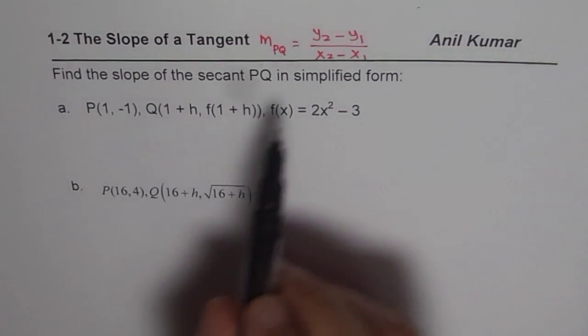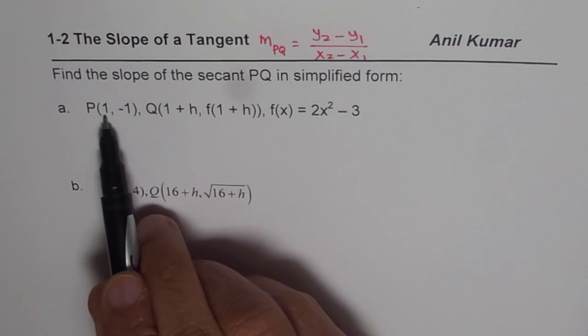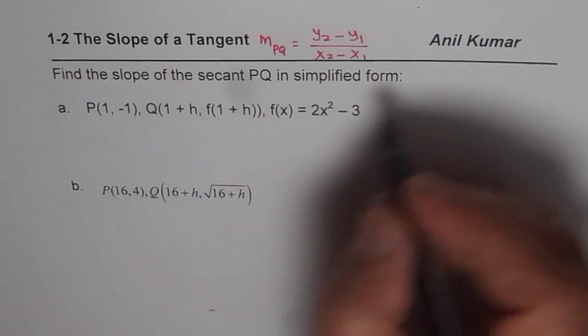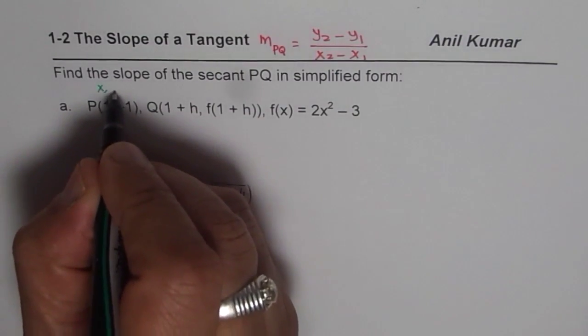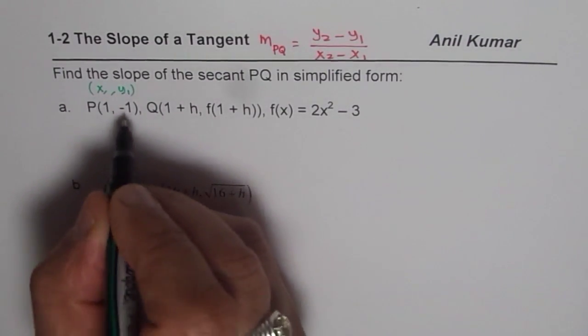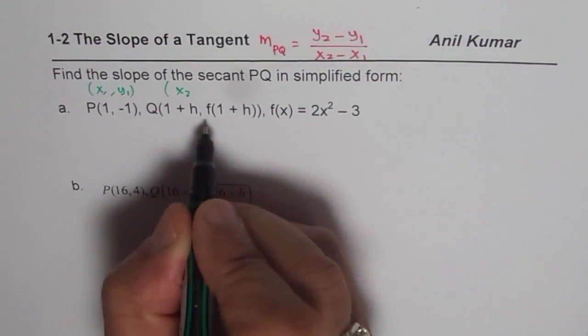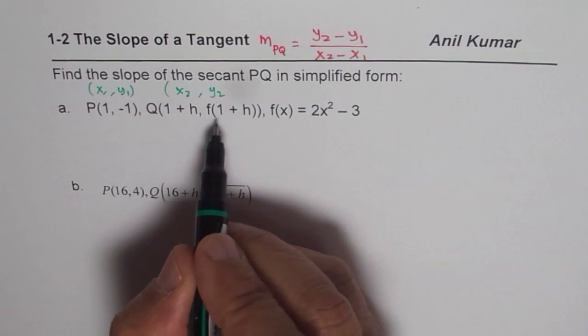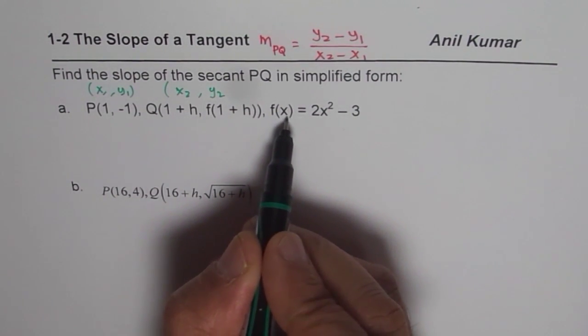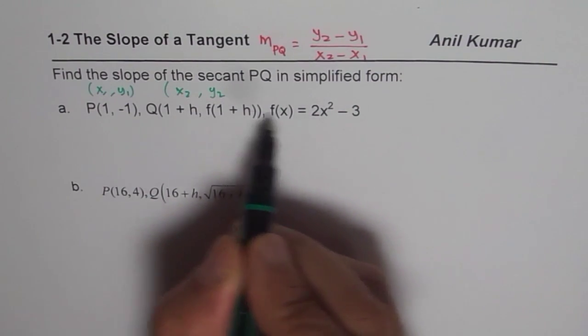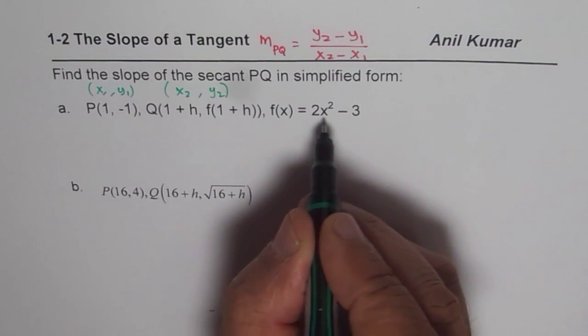Now, let us begin by finding what these two points are for part 1. P is (1, -1), so we know in this particular case x₁ is 1 and y₁ is -1, and Q is (1+h). So we know x₂ is 1+h and y₂ is f(1+h), where we are given the function f(x). Now, to find this value, we need to substitute 1+h in the function to calculate. So that is what we should find.